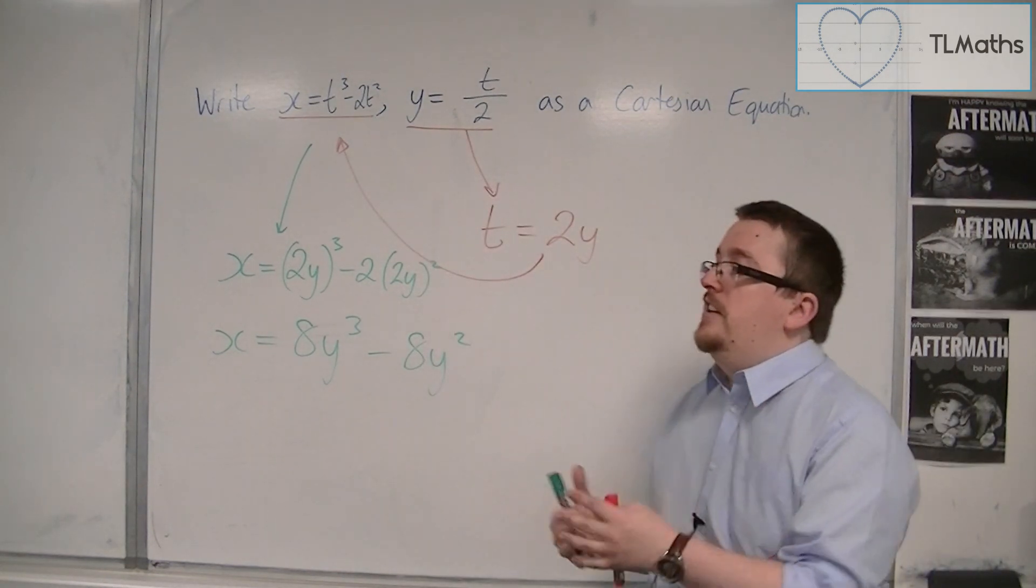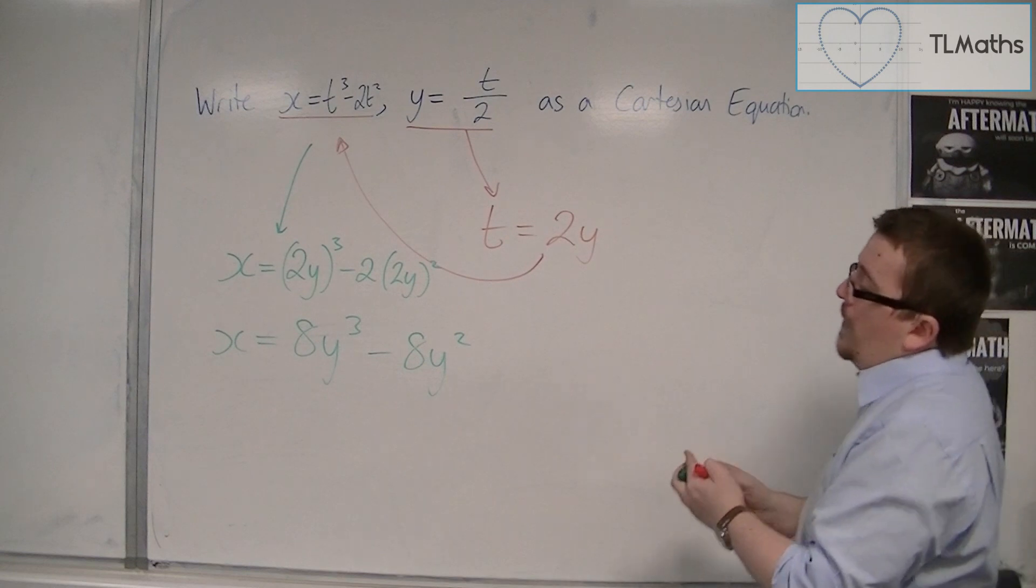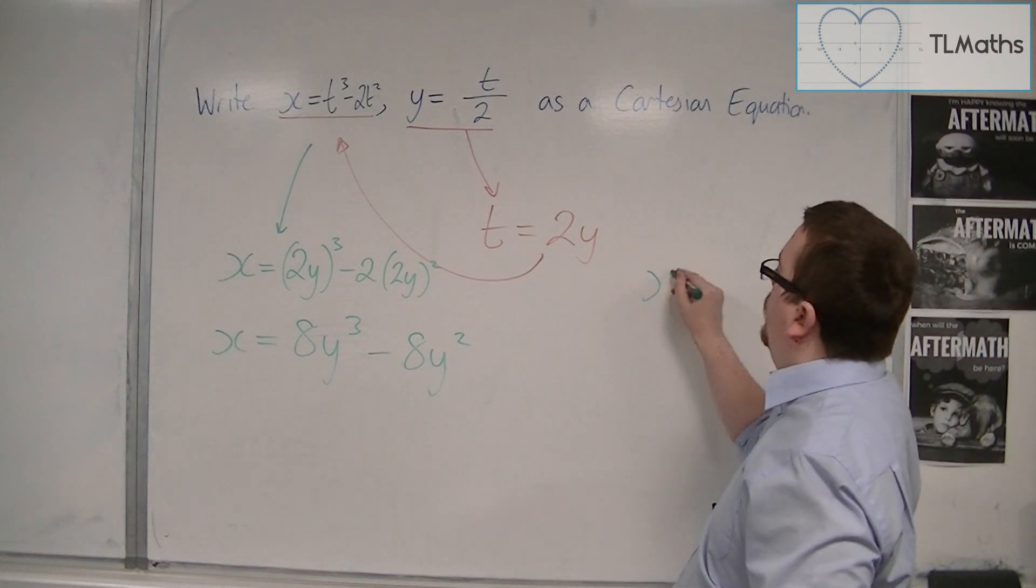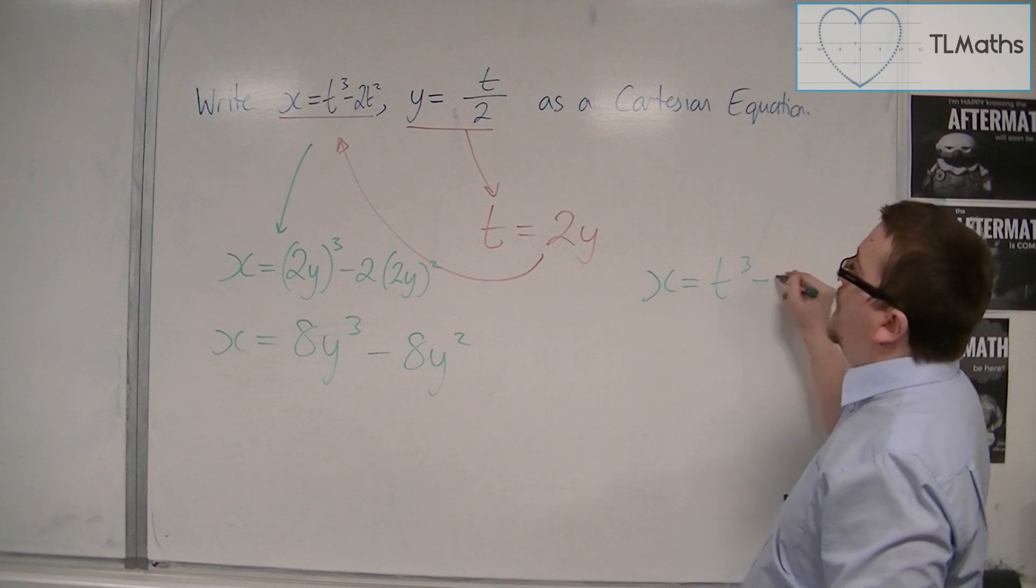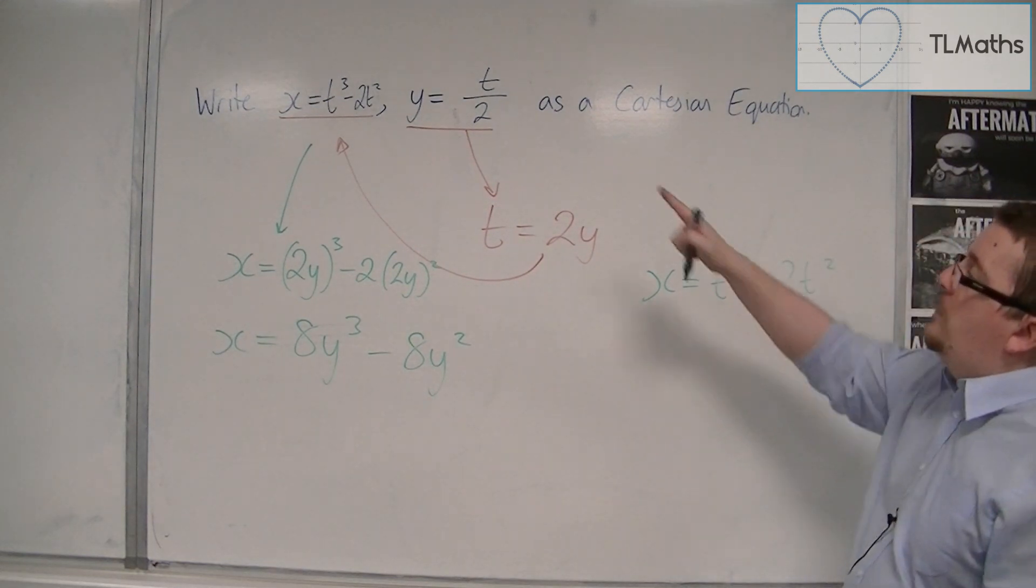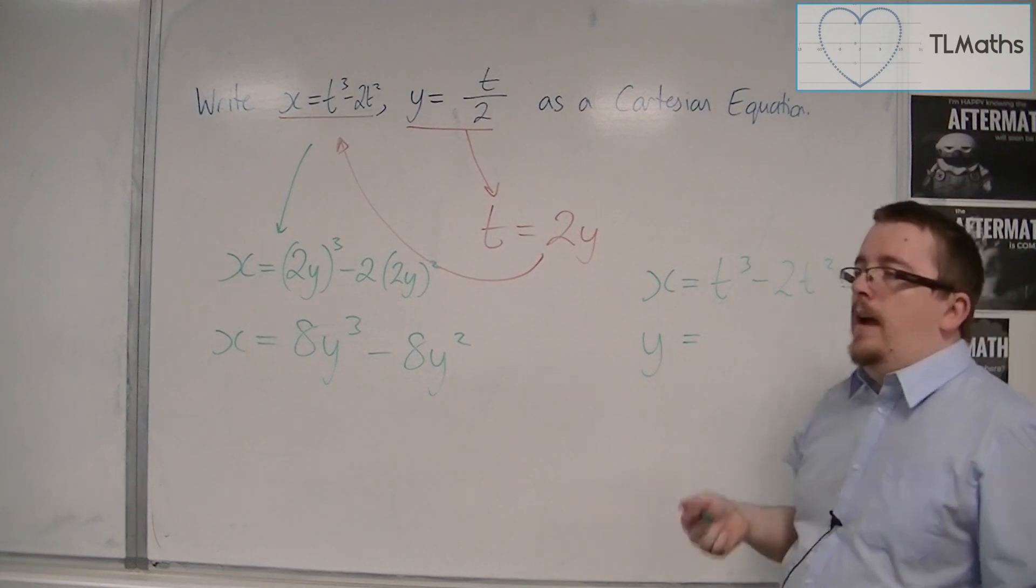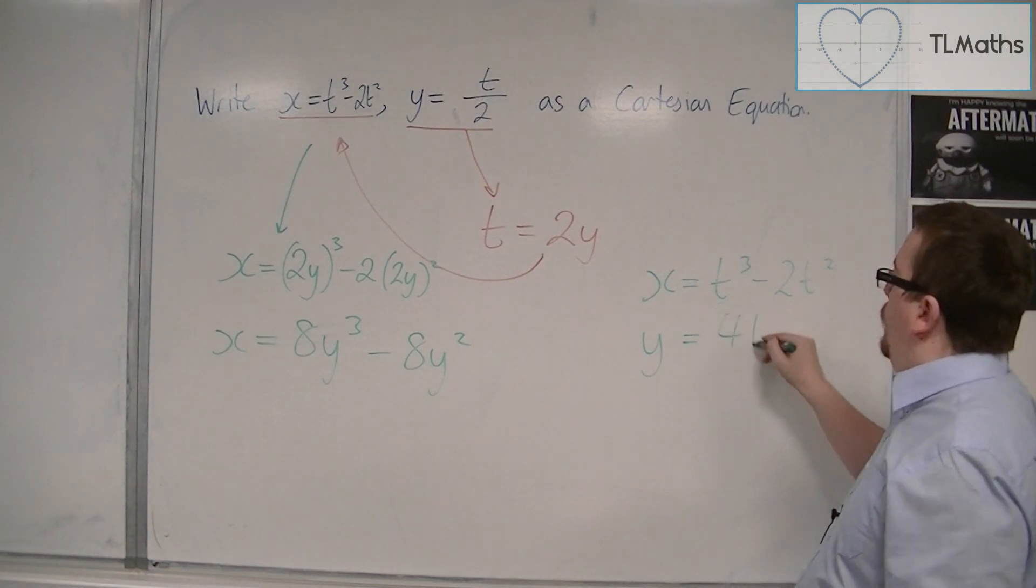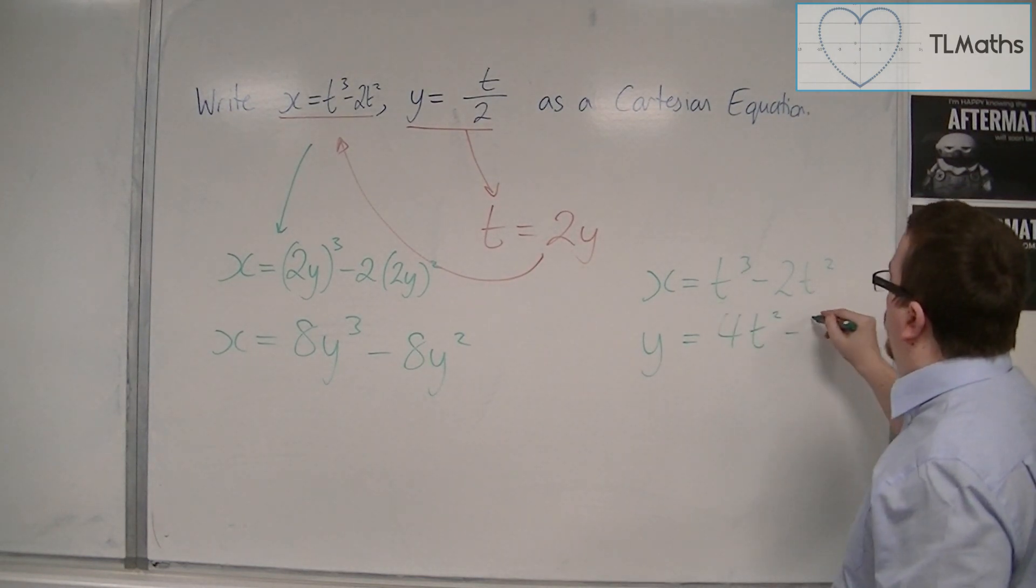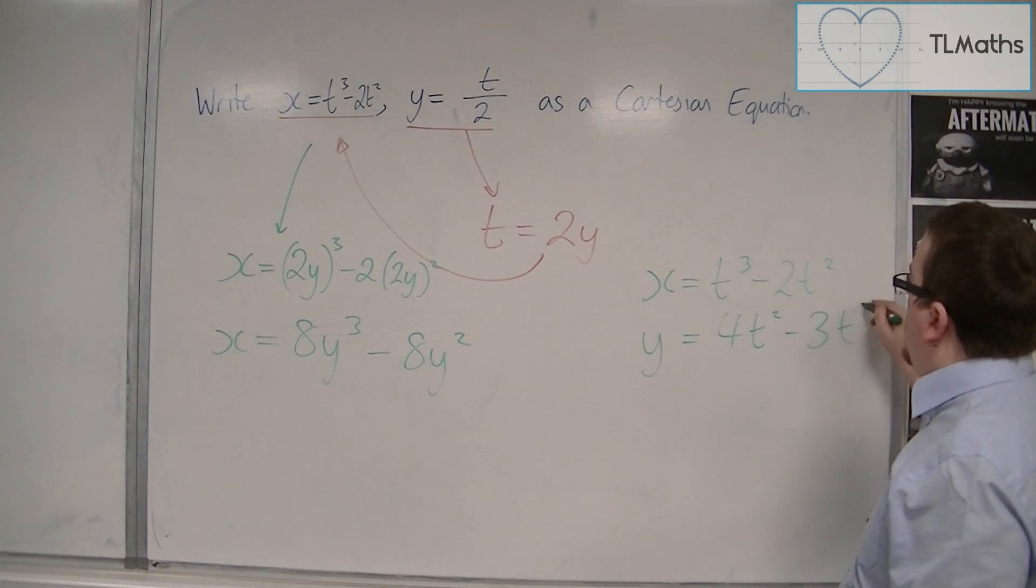And what you could imagine is that there are going to be some... if I wrote down like x = t³ - 2t², so we stayed with the same one for x, but then I wrote y as something like 4t² - 3t⁴,